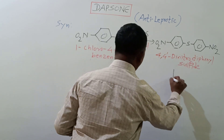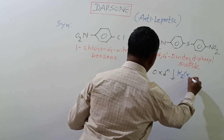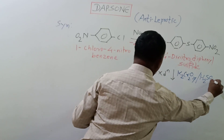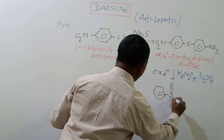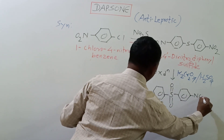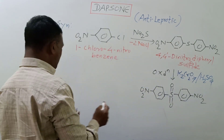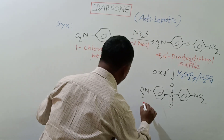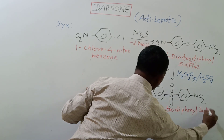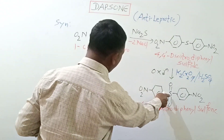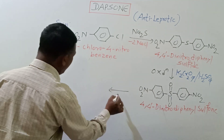This sulfide derivative then undergoes oxidation in the presence of potassium dichromate and sulfuric acid. Here you can easily see that this sulfur undergoes oxidation by treatment with potassium dichromate. The derivative so obtained is called 4,4'-dinitrodiphenyl sulfone, where the sulfur is attached with two oxygens by a coordinate bond — that's why it is called a sulfone derivative.